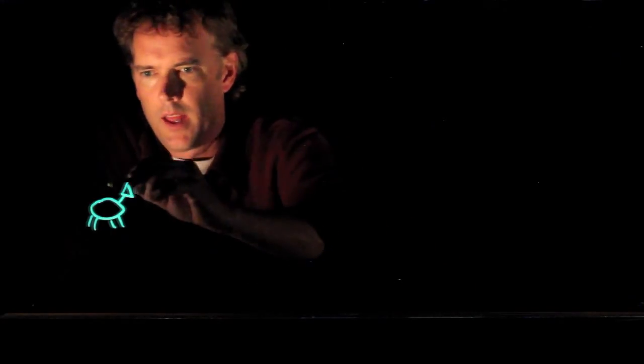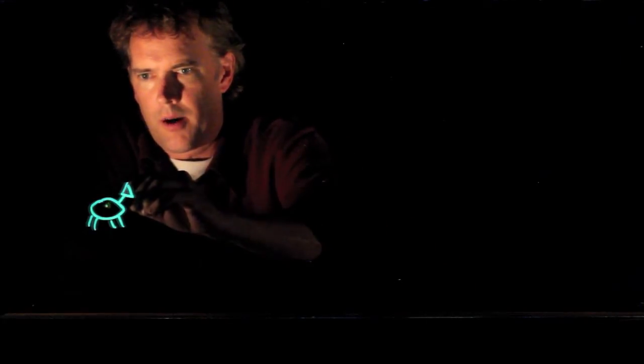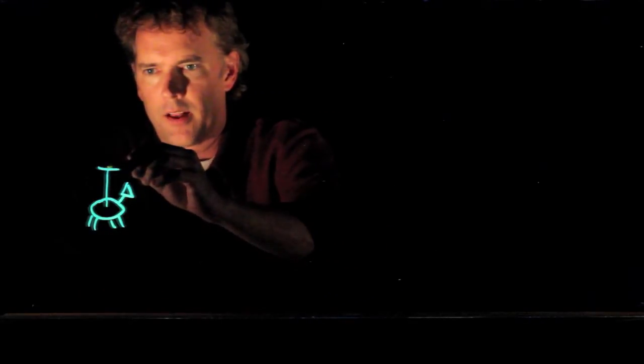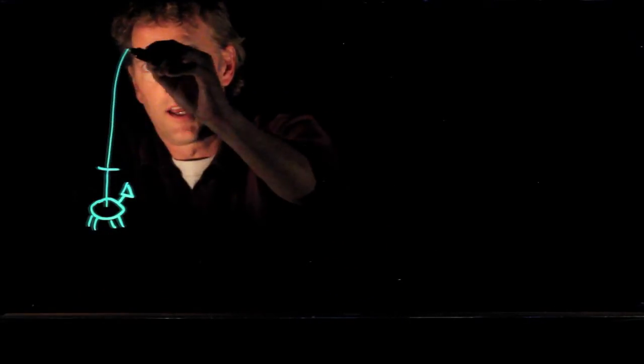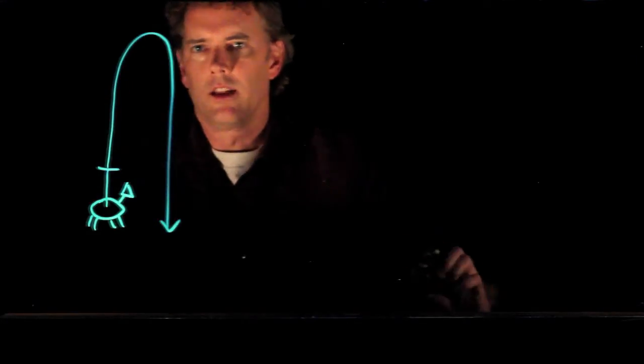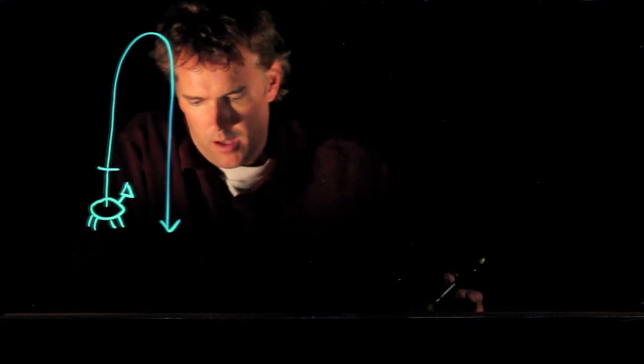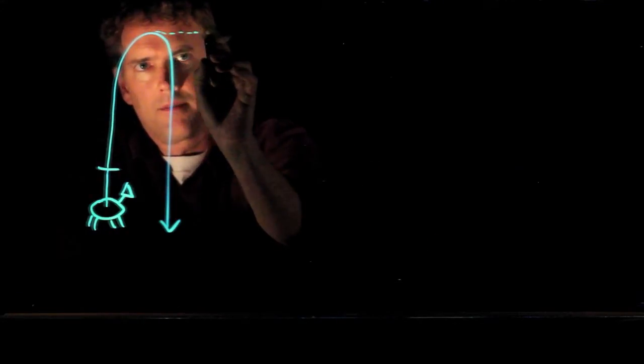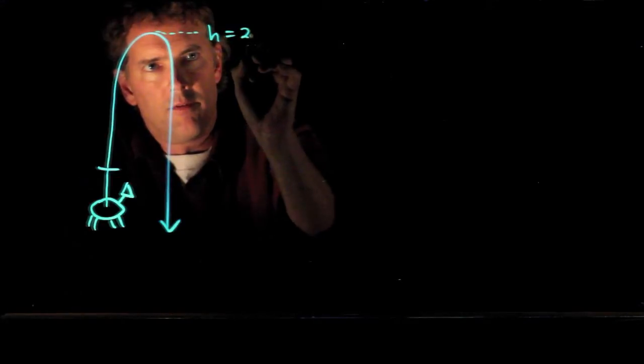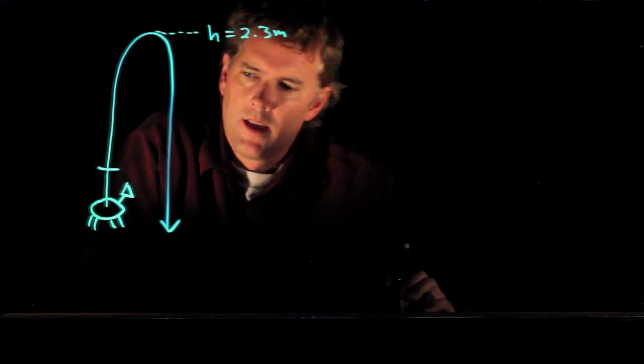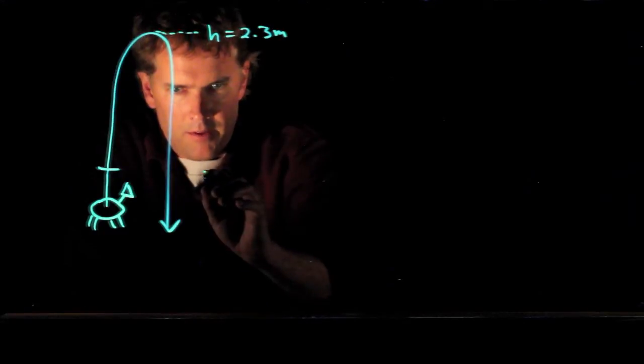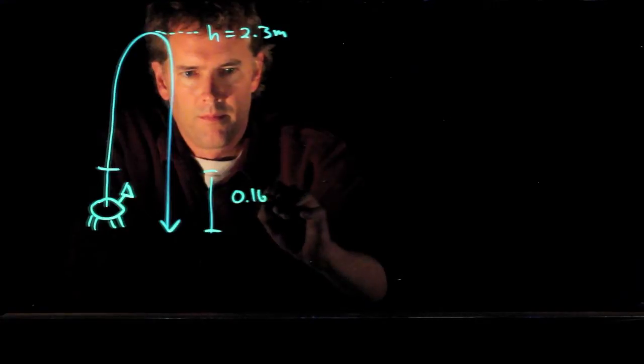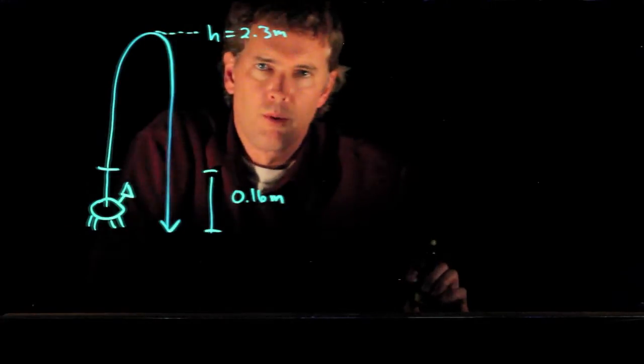Here's our galagos. It jumps up and as those legs push it upward it is accelerating, and then once the legs finish pushing up it is in free fall. These animals can rise to a height here of 2.3 meters and they do that by accelerating over a region that is pretty small, 0.16 meters.